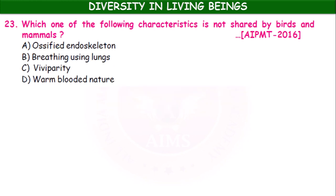Which characteristic is not shared by birds and mammals — ossified endoskeleton, breathing using lungs, viviparity, or warm-blooded nature? The answer is viviparity, because birds are oviparous but mammals are viviparous.